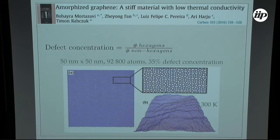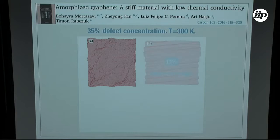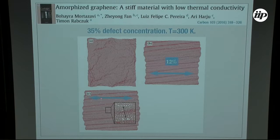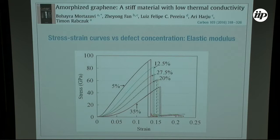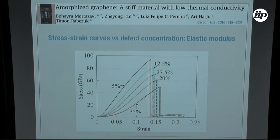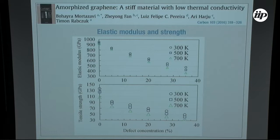This is a 50×50 nanometer patch of almost 100,000 atoms. We begin by looking at mechanical strength — pulling until it breaks. For increasing defect concentrations from 5% to 35%, we see that not only the slope decreases but also the stress at which it breaks decreases, while the strain at which it breaks increases. So the more defects, the more you can pull it before it breaks, but the easier it is to pull.